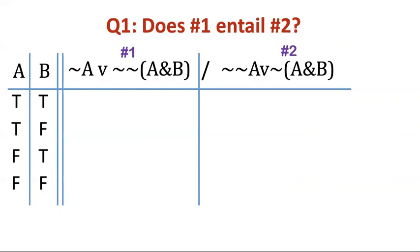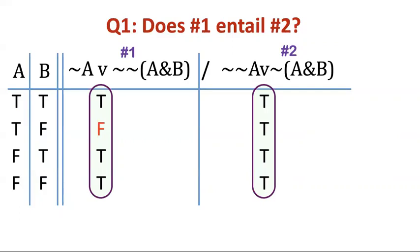Okay, we're going to talk about the answers. When I do the truth functions for these, this is what I get. The first one is T, F, T, T, so I just put in red the only false value. The second one is all T's.